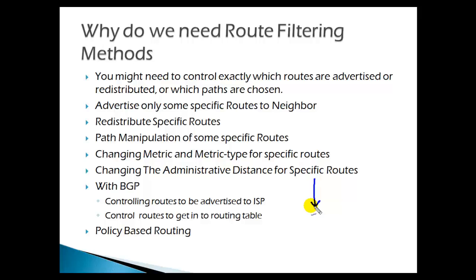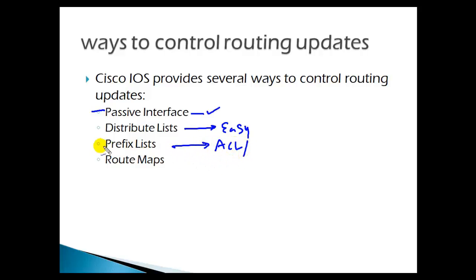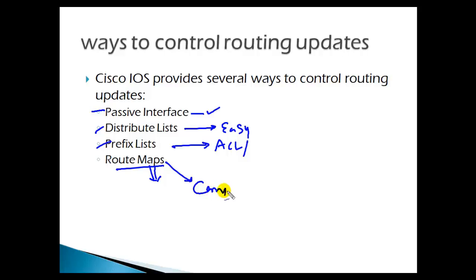Before getting into practical scenarios, let's understand the different methods used for route filtering. The first is passive interface, which we'll cover in more detail in upcoming videos. Distribution list is one of the easier methods. We can also use prefix lists, which are similar to ACL statements. Finally, there are route maps, which are one of the more complex but flexible route filtering methods — they work like an if-else program.